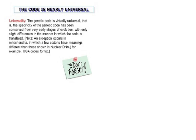Now, one of those suggest questions which would come and challenge you: the code is nearly universal — the genetic code is virtually universal. The specificity of the genetic code has been conserved from very early stages of evolution, with only slight differences in the manner in which the code is translated. Note that an exception occurs in mitochondria, in which a few codons have meanings different from those in nuclear DNA — for example, UGA codes for tryptophan. So the universality can be challenged, and that does happen in the mitochondria.